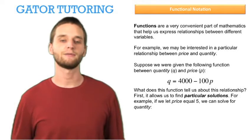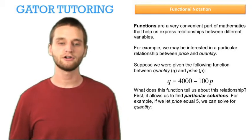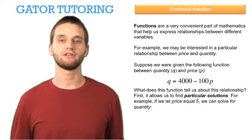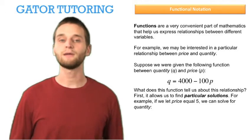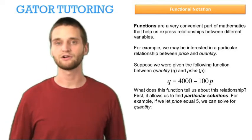What does this function tell us about this relationship? First, it allows us to find particular solutions. For example, if we let price equal 5, we can solve for quantity.